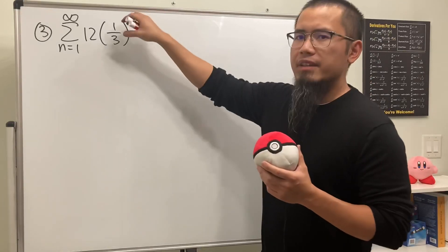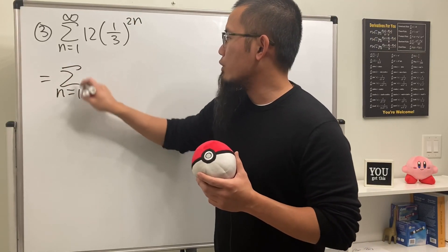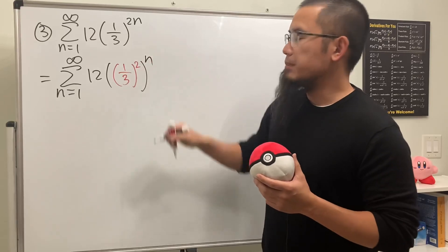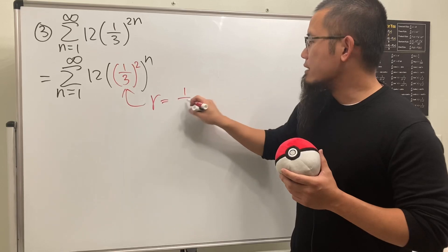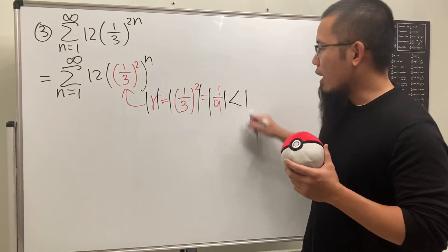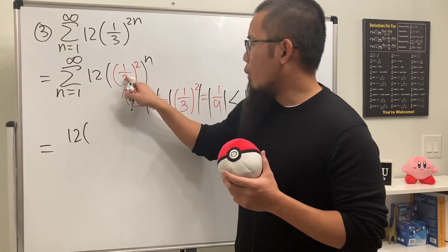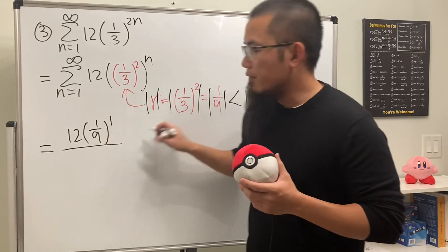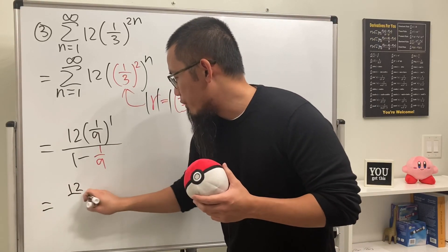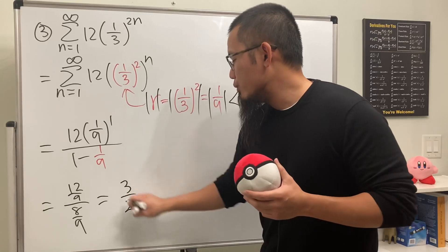We must make sure the power is just n, so we rewrite the series: starting at n=1 to infinity, we have 12 times (1/3)^(2n), which is 12 times ((1/3)^2)^n. So r is actually (1/3)^2 = 1/9, and |r| < 1, so it converges. The first term is 12 times (1/9)^1. Dividing by (1 - 1/9) gives (12/9)/(8/9) = 12/8 = 3/2.